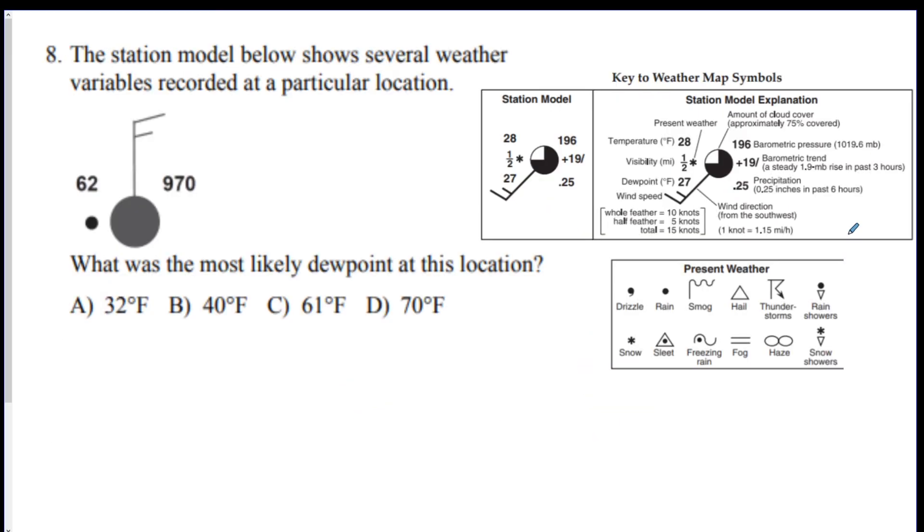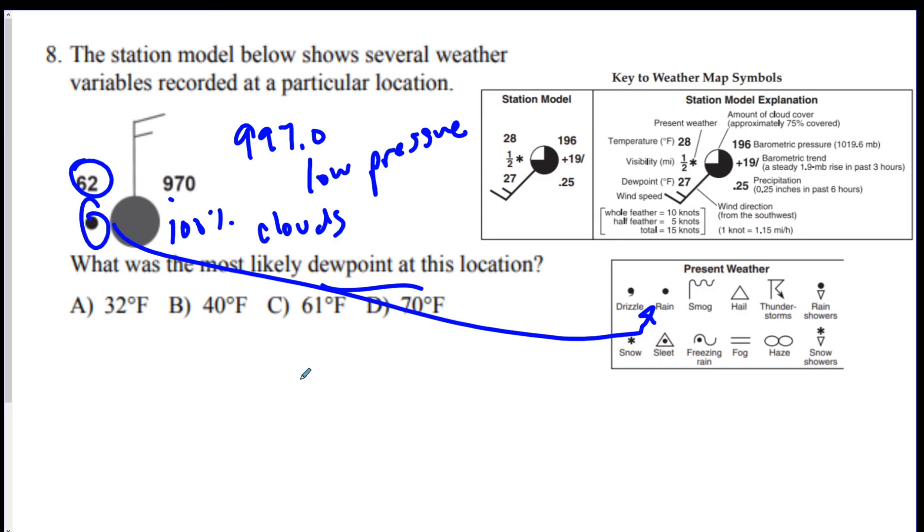Number eight. What was most likely the dew point at this location using the station model? Well, a couple things. There's a nine here, so this is 997.0. The pressure is low. You got 100% clouds, and you got rain, and you got a temperature of 62. They want to know what the dew point is. Well, if you remember from humidity, if the temperature is equal to the dew point, you're going to have all these things happen. Clouds, low pressure, rain. So you want the dew point to be very close to this air temperature, so C is your best answer.